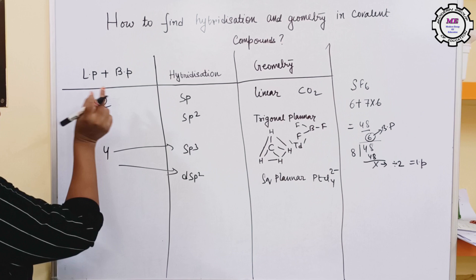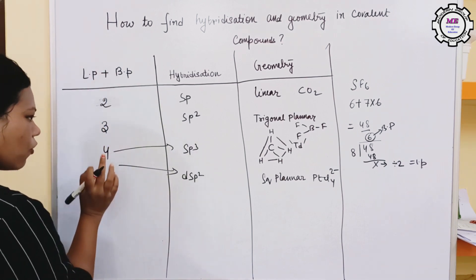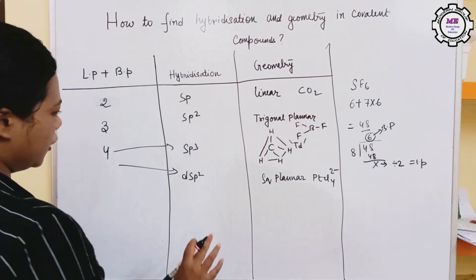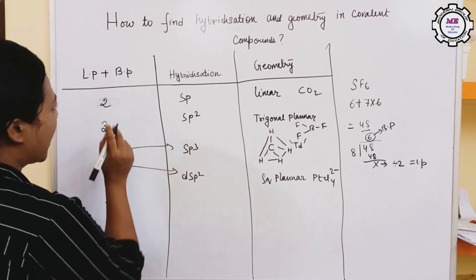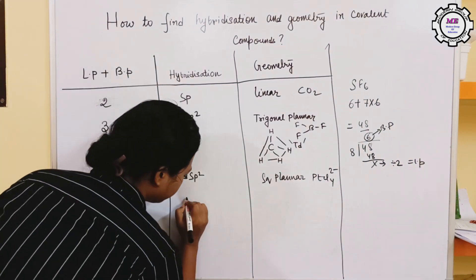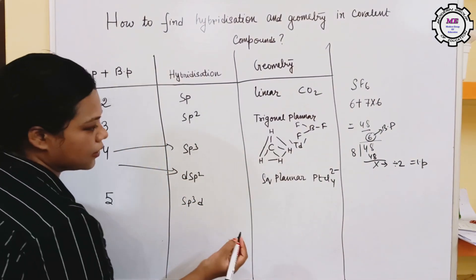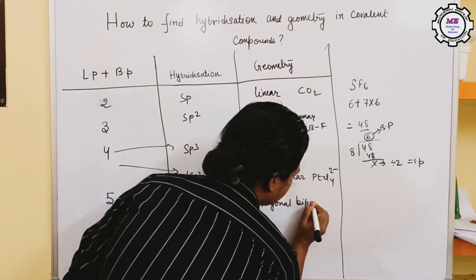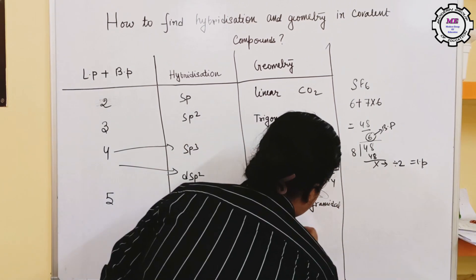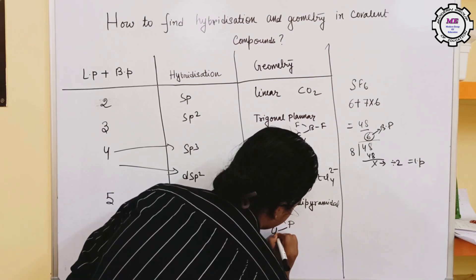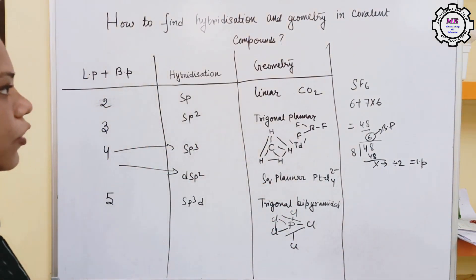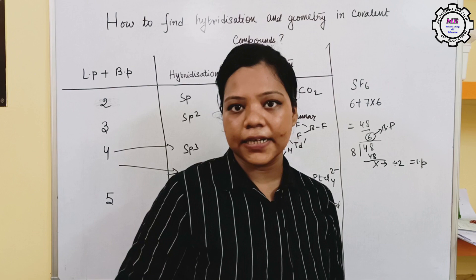For LP plus BP equal to 4, if both lone pair and bond pair add to 4 you get tetrahedral; if they add to 3 you get trigonal planar. If LP plus BP equals 5, you will have SP3d structure, which is trigonal bipyramidal — for example, PCl5. You can pause the video and write this down.